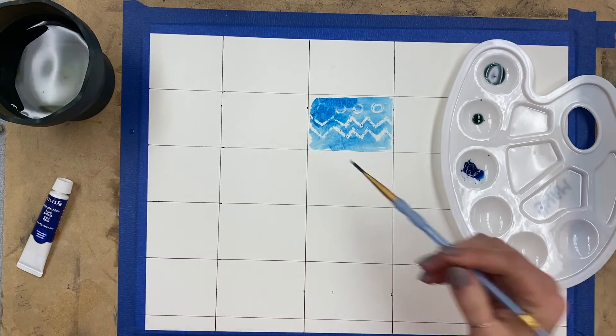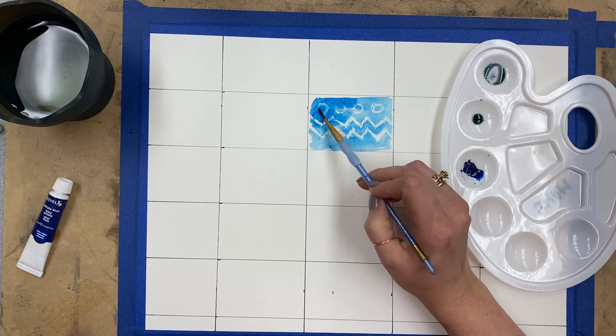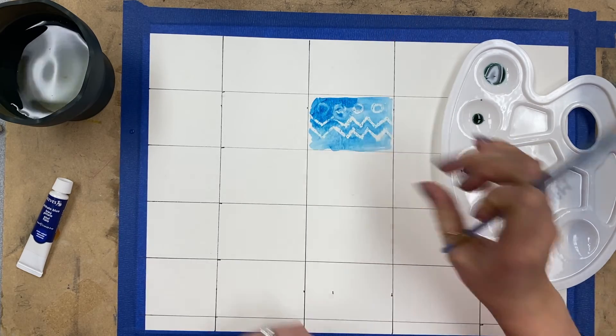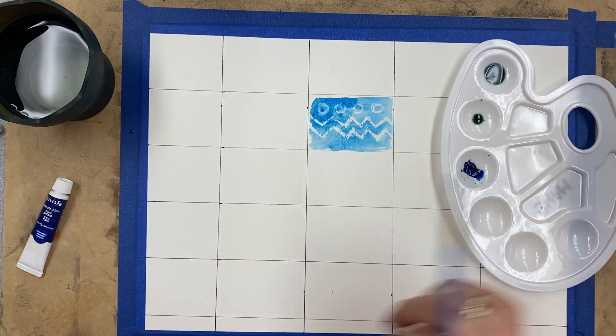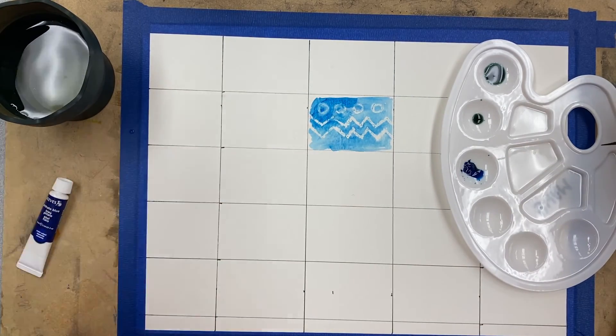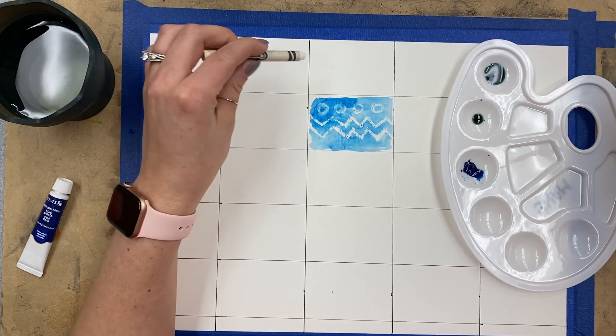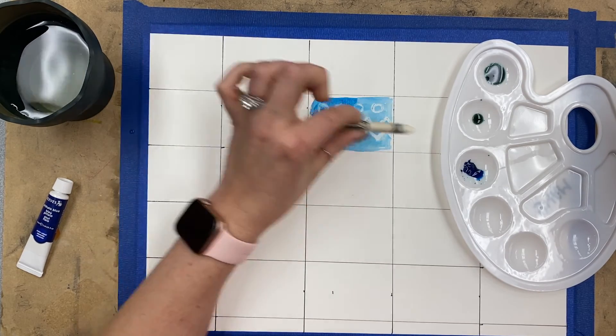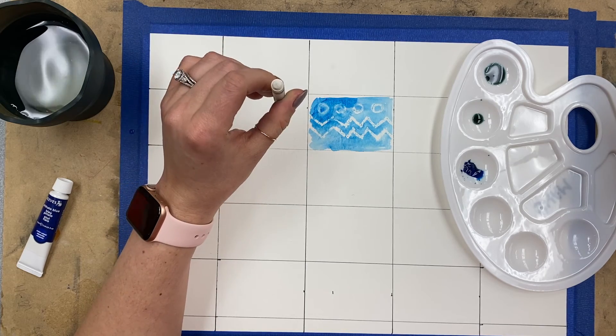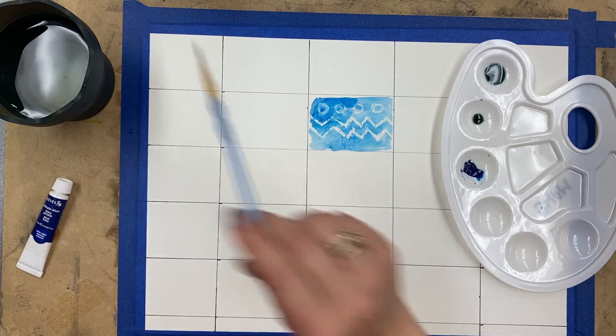You can always blot it away if you want to. I want you to do one square using your crayon and do some sort of basic pattern—doesn't have to be exactly circles and zigzags, but some kind of pattern. Then paint over it using your watercolor.